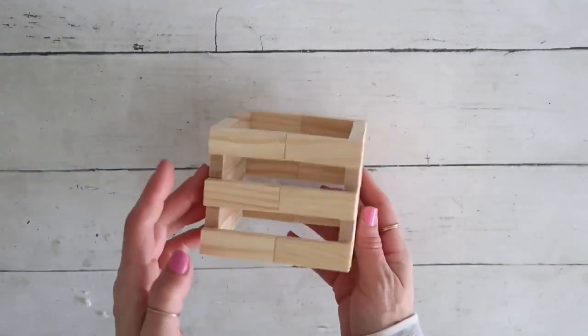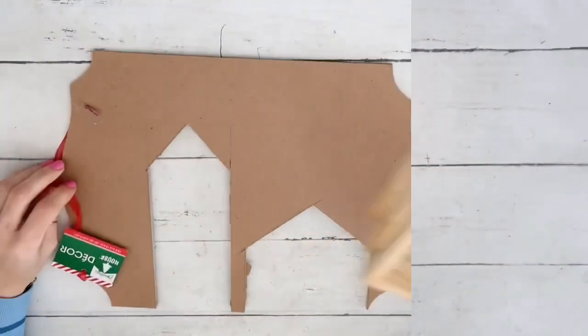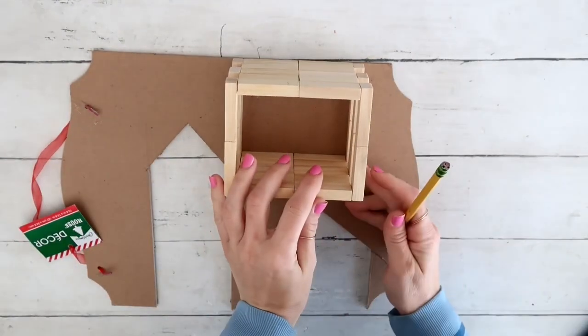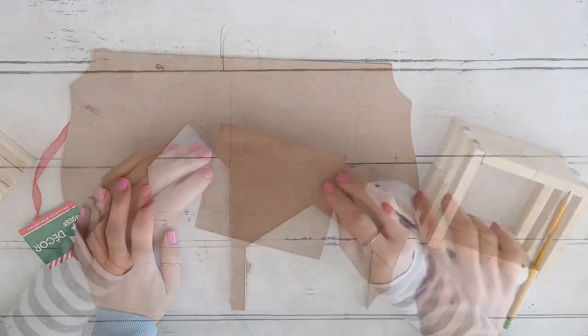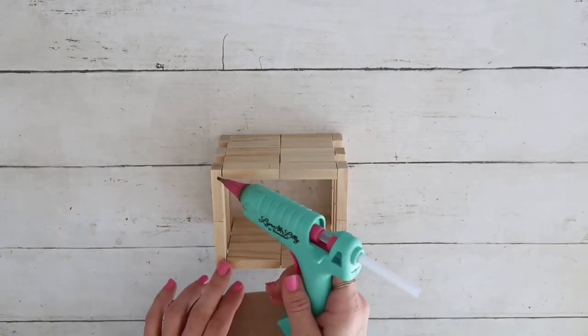Next step will be to take a Dollar Tree sign, or really anything that you have, and trace it to create a bottom for this. I'm going to just hot glue it.